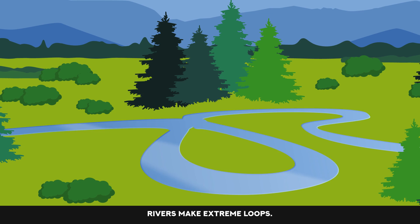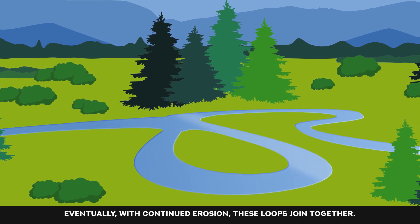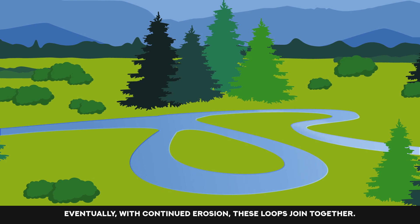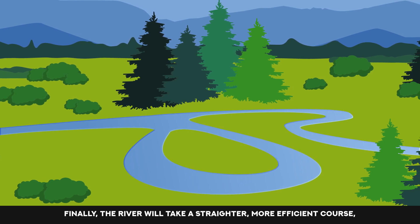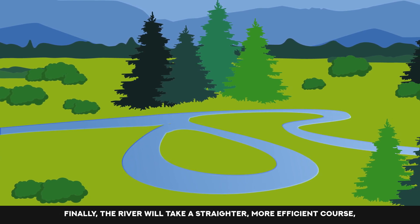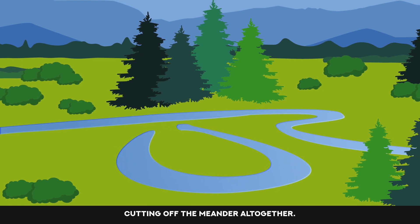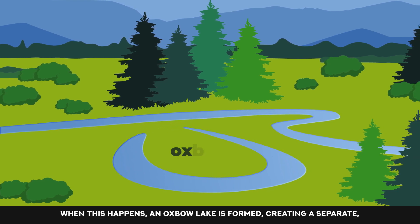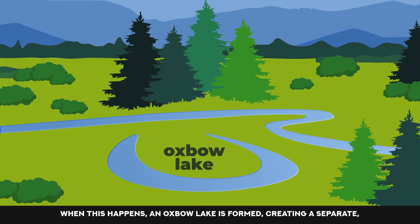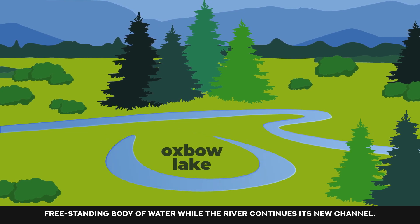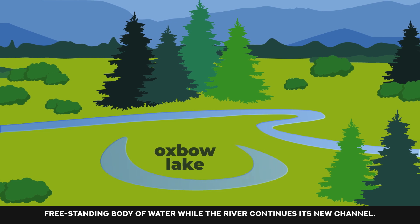Rivers make extreme loops. Eventually, with continued erosion, these loops join together. Finally, the river will take a straighter, more efficient course, cutting off the meander altogether. When this happens, an oxbow lake is formed, creating a separate, freestanding body of water, while the river continues its new channel.